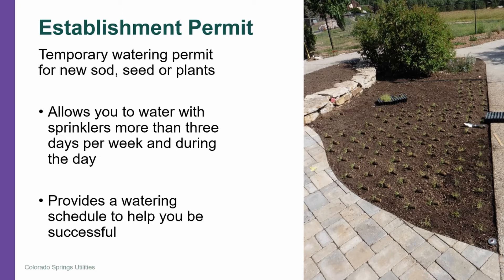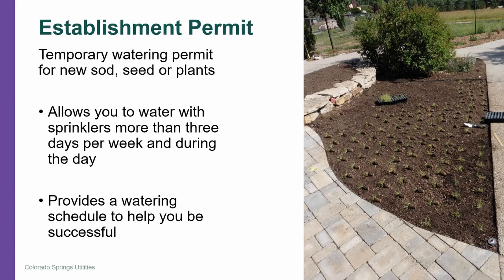We can also provide a watering schedule to help you be successful. Who should apply for an establishment permit? Anyone using sprinklers to water new grass, sod, seed, or landscape plants. An establishment permit is not needed for projects that are using drip irrigation, hose watering with a shutoff nozzle, or watering cans.